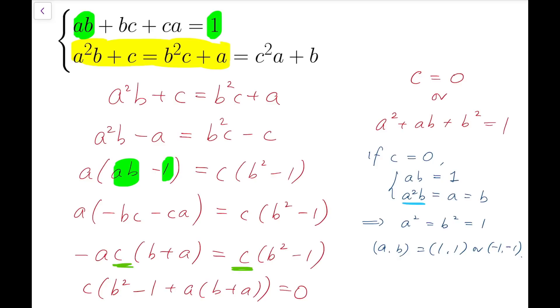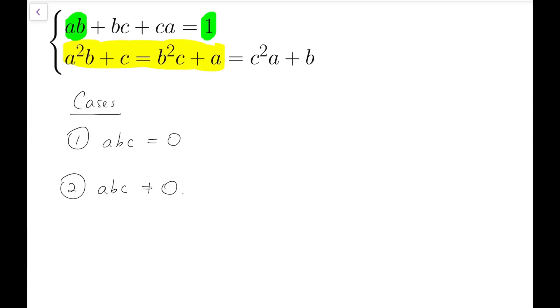Now if c is not 0, then we have to consider this equation a² + ab + b² equals 1. But one single equation would not help. So this motivates me to actually not divide the cases into c equals 0 or take this equation in yellow, but instead divide into cases depending on the value of a times b times c. So we divide into two cases. The first one is that this product is equal to 0 and the second case is that this product is not.